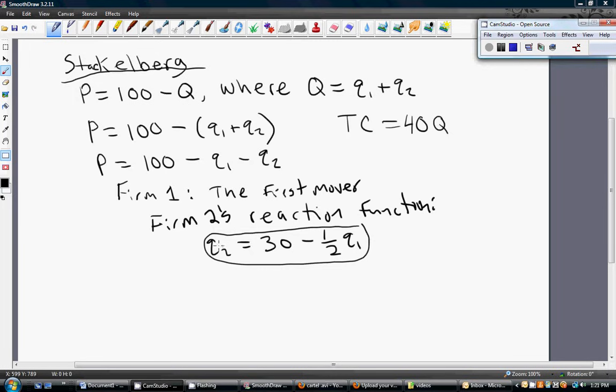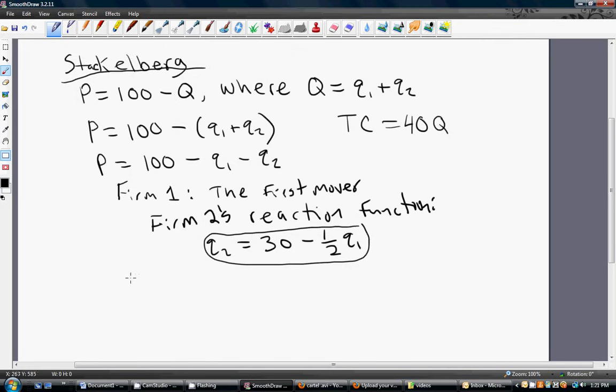So what we're going to do is take firm 2's reaction function and plug it into the inverse demand equation. This is how firm 1 will incorporate how firm 2 responds to its output choice.